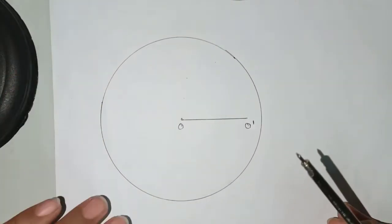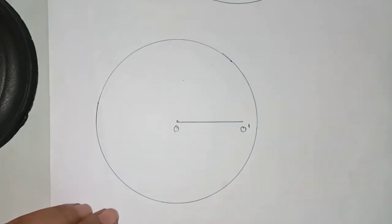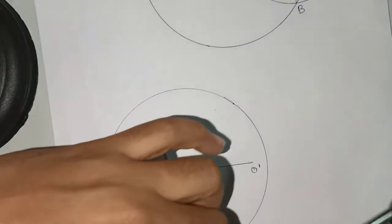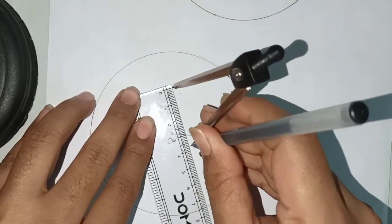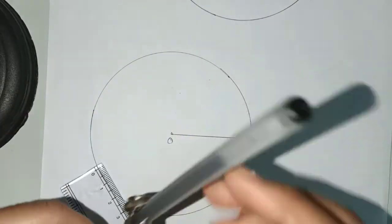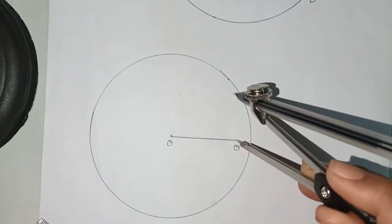Now we're going to draw a circle of radius 3 centimeters. Take O prime as the center.